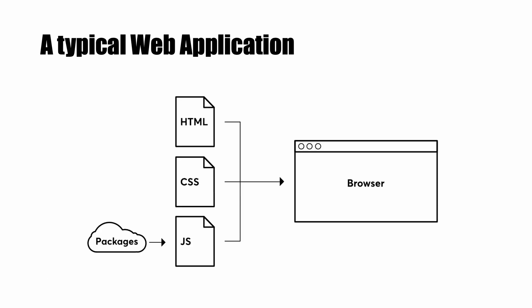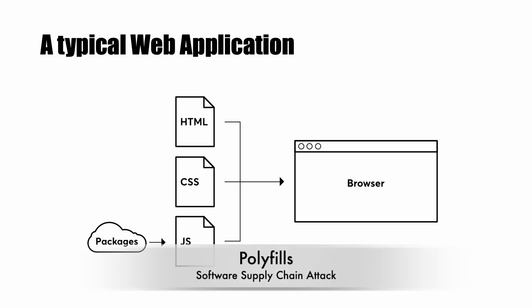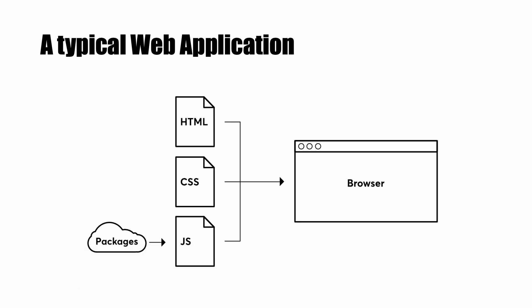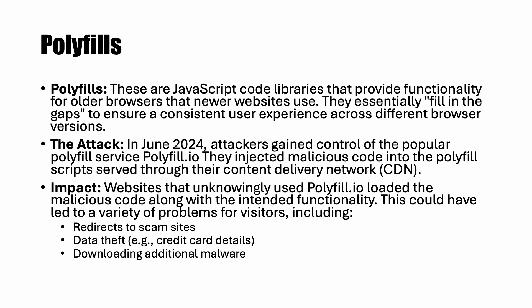We are going to see two sophisticated software supply chain attacks recently seen. The first is the polyfills attack. To understand it, let's first look at a typical web application, which includes HTML files, CSS, JavaScript, and different resources like images, videos, and JSON files from a database — all bundled together and presented in the browser. Polyfills is a JavaScript library that provides functionality for older browsers, filling in the gaps to ensure consistent user experience across different browser versions.